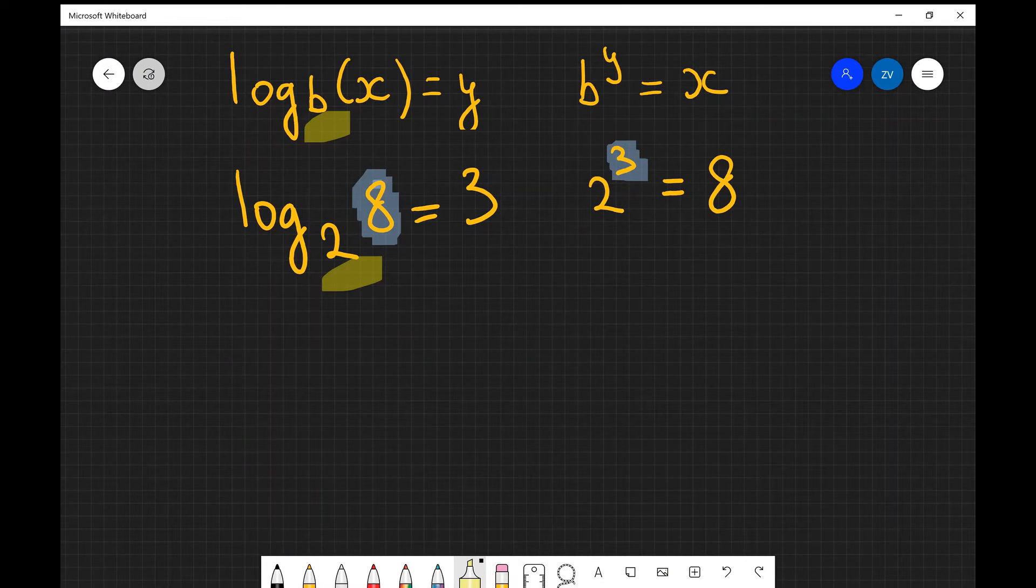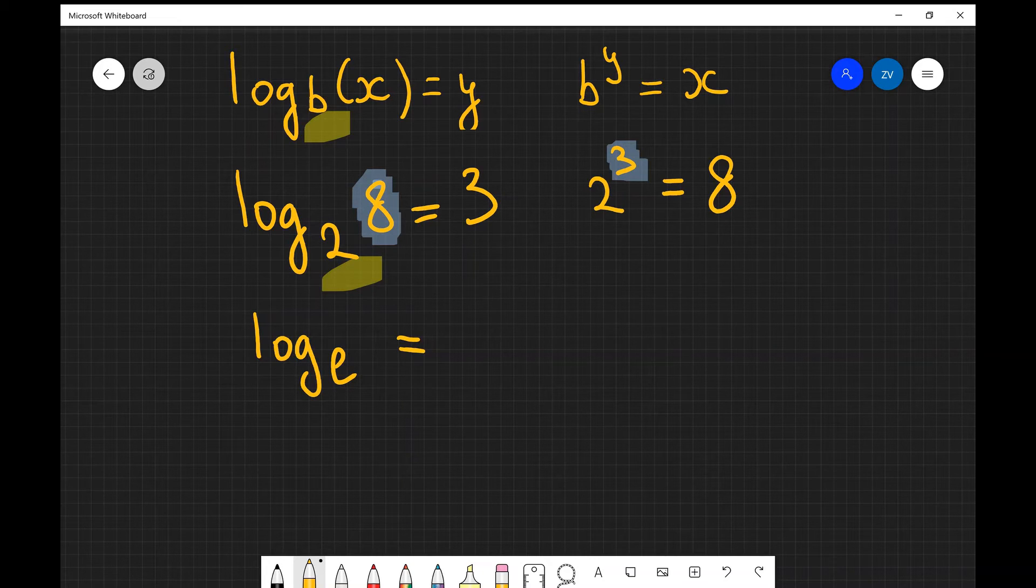Now there are two special bases that are particularly useful in physics. One of them is the natural logarithm which is log base e. So e is just a number, it's a very very important number in mathematics in physics, it's approximately equal to 2.718 etc, it's actually an irrational number so it means that it's never ending. If we have a log base e we tend to call that just ln.